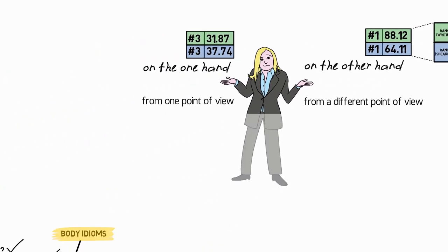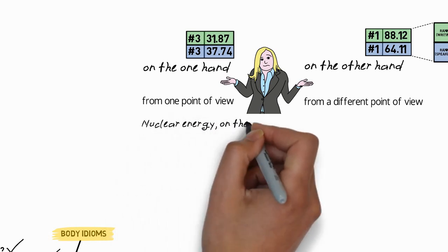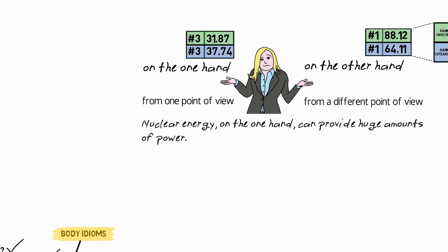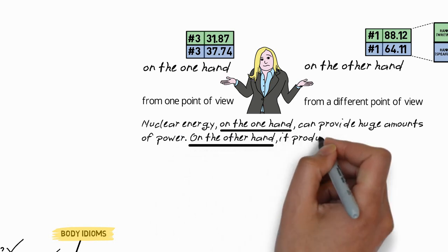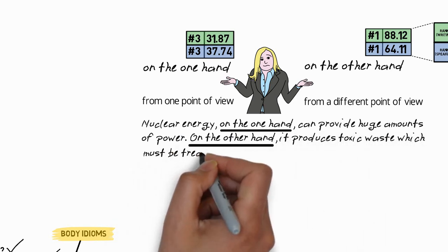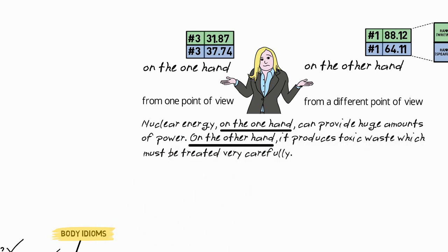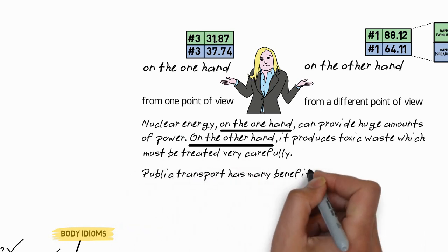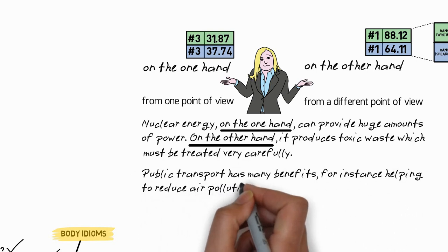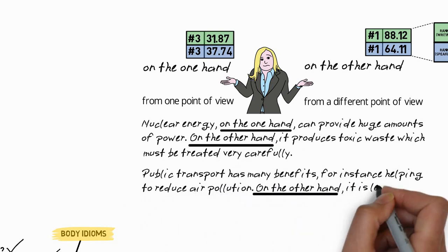The first line shows the rank of the idiom for writing and the frequency per million words, while the second row shows the rank for speaking and the frequency per million words for speaking. So as I've just said, on the other hand is the most common idiom for both writing and speaking, with a frequency of 88.12 per million words for writing and also quite high frequency 64.11 for speaking. So let's see some examples of these in real sentences.